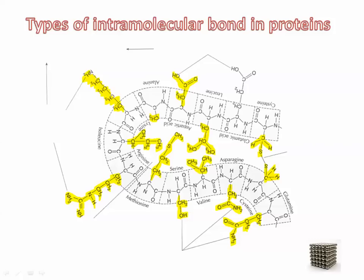Here's a diagram showing a chain of amino acids — cysteine, glutamic acid, leucine, aspartic acid, alanine, and so on. The highlighted bits are all the R groups, while the regular backbone is between the dotted lines. You can see these R groups interacting in various ways. For example, this part with lots of carbons and hydrogens is very nonpolar, and nonpolar groups tend to group together.